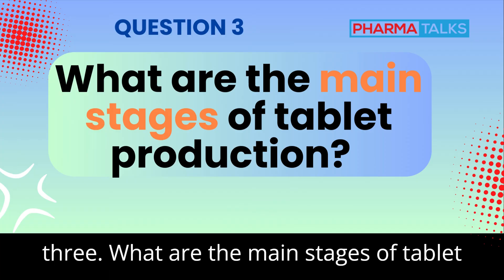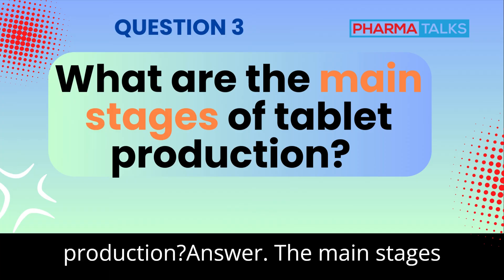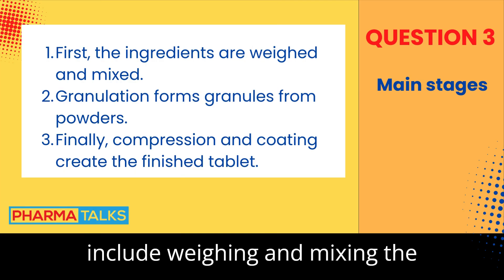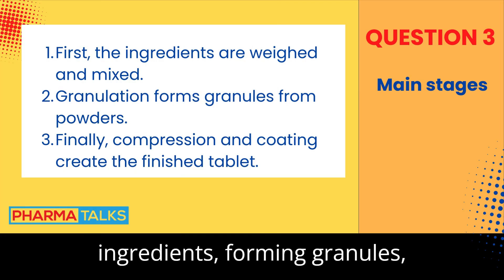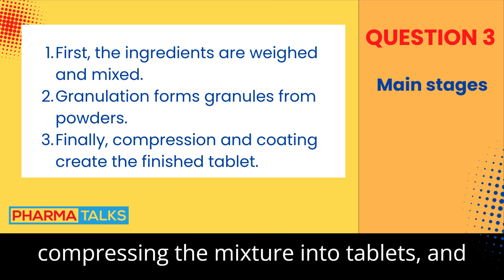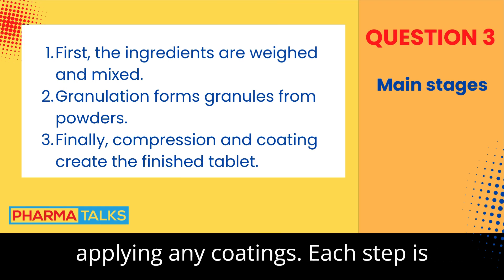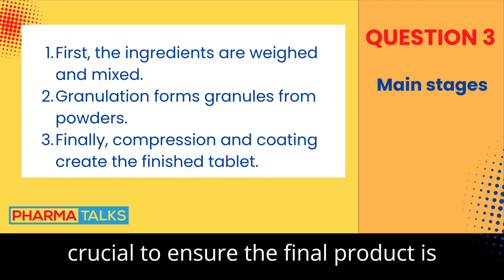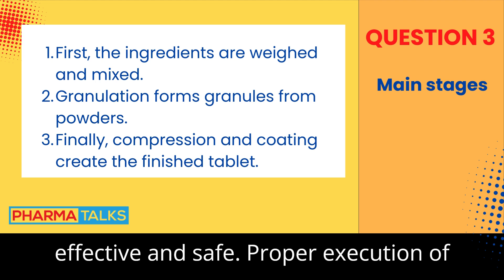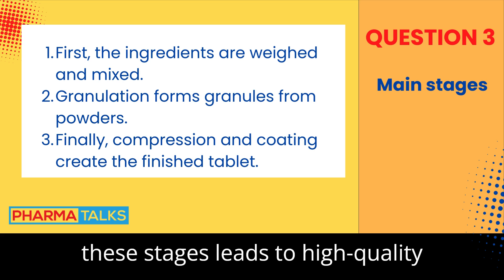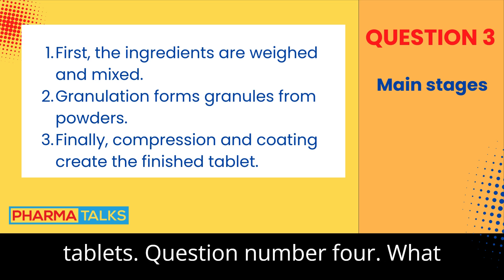Question 3: What are the main stages of tablet production? The main stages include weighing and mixing the ingredients, forming granules, compressing the mixture into tablets, and applying any coatings. Each step is crucial to ensure the final product is effective and safe. Proper execution of these stages leads to high-quality tablets.